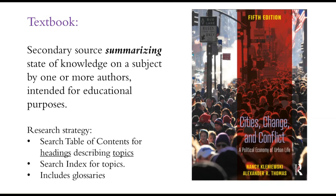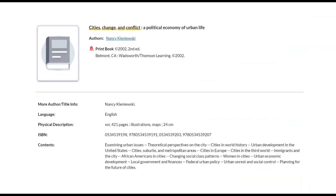Next is the textbook. This is a secondary source summarizing the state of knowledge on a subject by one or more authors and intended for educational purposes. It would use and refer to standard classic literature in the field that is best known. The research strategy would be to search the table of contents for the headings describing the topics covered to see if it will be relevant, to search the index for topics, and it will include glossaries of key terminology plus other educational tools. The titles of the chapters would all be listed in the library catalog.